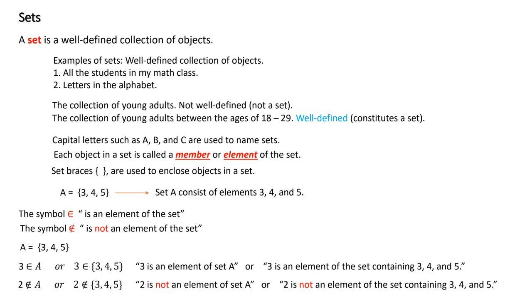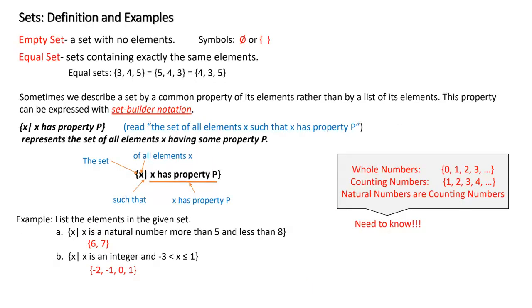When we write a slash over a symbol, we represent that as 'not.' The opposite — a slash means that the element is not included in the set. For instance, if I say two is not an element in A, that is true — you don't see the number two inside our set. Please stop me and ask questions if something is not clear.